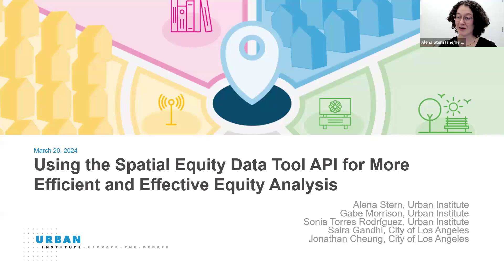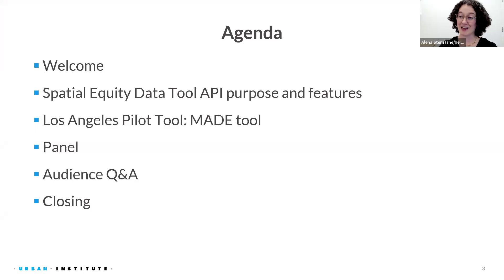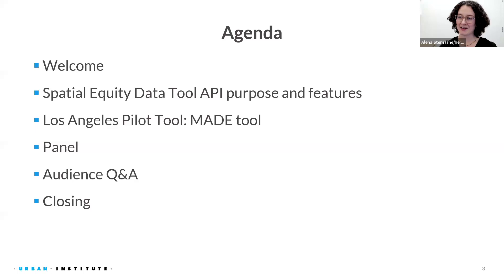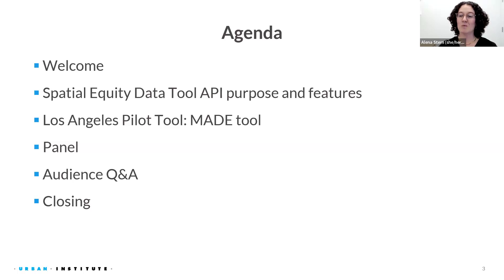We have a really excellent run of show and set of speakers for you today. In just a moment, I'm going to turn it over to my colleagues Gabe and Sonia from the Urban Institute, who will talk about the spatial equity data tool, why we created the API, and some of the new features it enables. We're then excited to be joined by our partners Cyra and Jonathan from the City of Los Angeles, who will talk about how they're using the spatial equity data tool API to power their own equity data tool. We'll have a moderated discussion and then open up the floor for questions and answers.